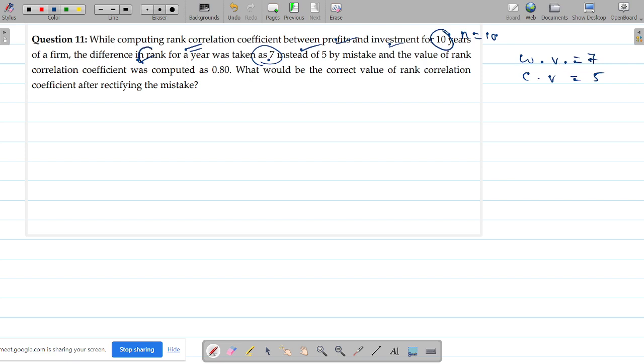Please make a note, it is talking about ranks, not the absolute values. And the value of the rank correlation coefficient was computed to be 0.8, which is actually wrong. What would be the correct value of rank correlation coefficient after rectifying the mistake?